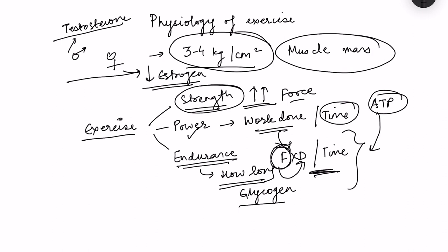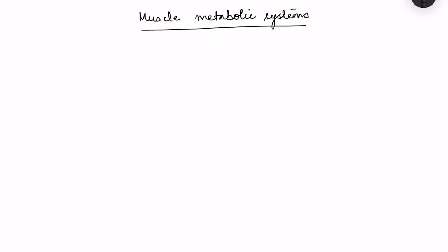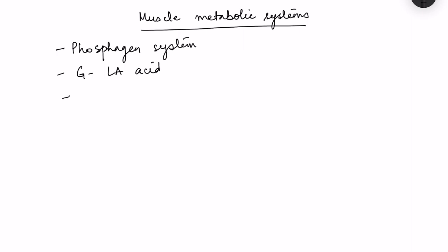For performing any exercise, what we need is energy, and the energy currency is ATP. The sources of this energy in muscles come under the muscle metabolic system. There are three fundamental sources of energy: the phosphagen system, the glycogen lactic acid system, and the aerobic system.